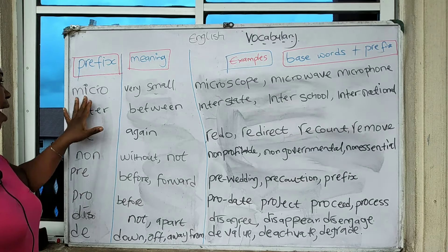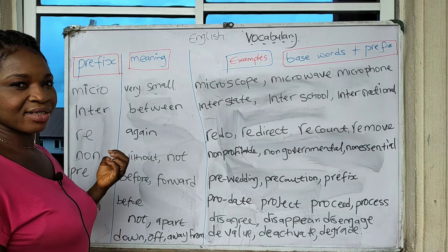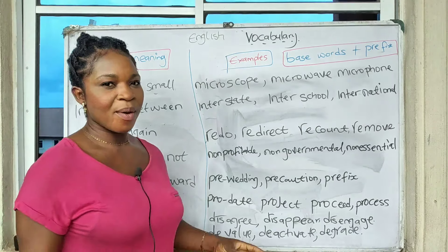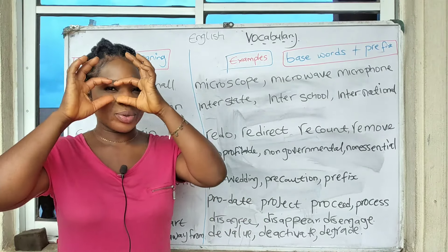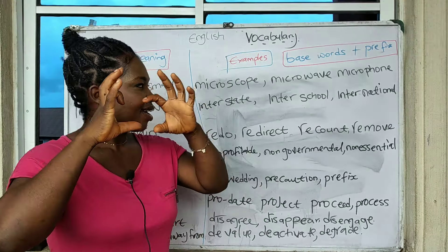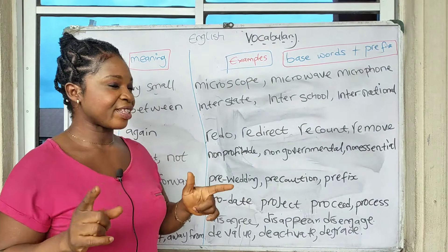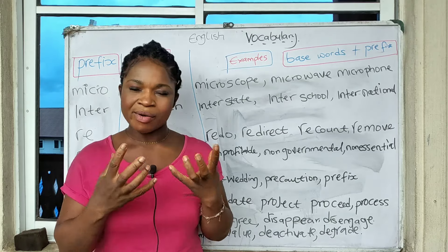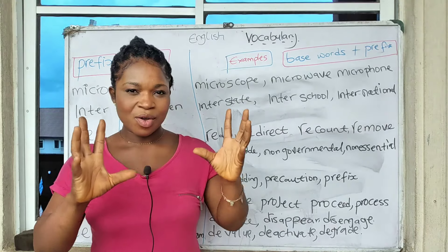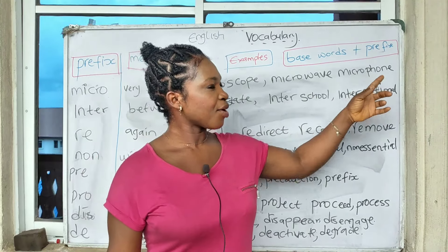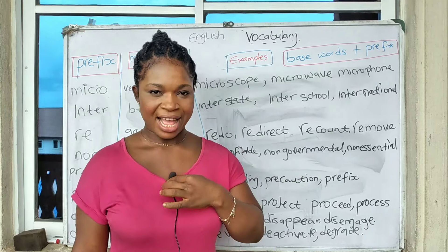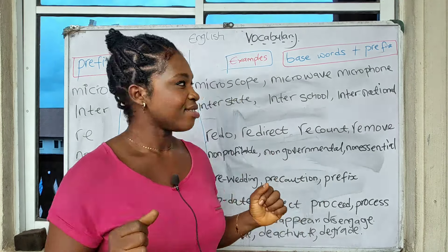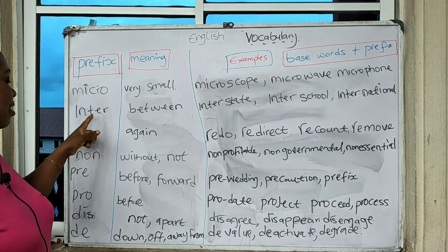The prefix 'micro' simply means very small — something that is small. We have 'microscope,' which is used to view tiny objects. We have 'microwave' for warming our food — it is equally small. We have 'microphone,' just like the one attached to my dress — it's equally small.